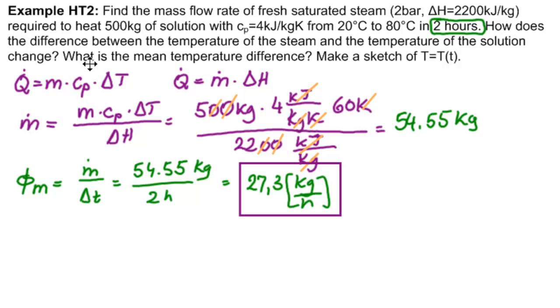Now, we need to know how does the difference between the temperature of the steam and the temperature of the solution change? Well, the solution changes from 20 degrees to 80 degrees Celsius, but we don't know the temperature of this fresh saturated steam. We have to go look it up on a table.